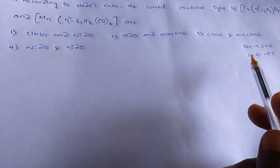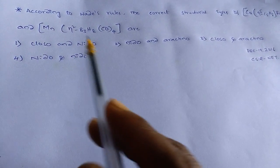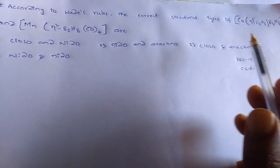Hi, this is Renjivy. This question appeared in December 19, 2016 CSIR NET. The question is, according to Wade's rules, the correct structural types of this complex.